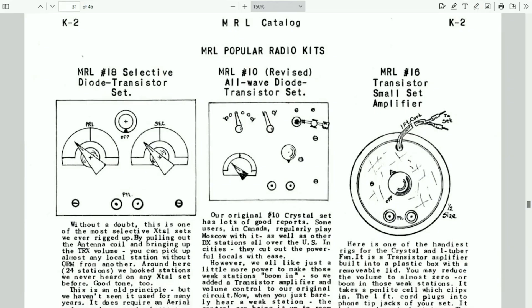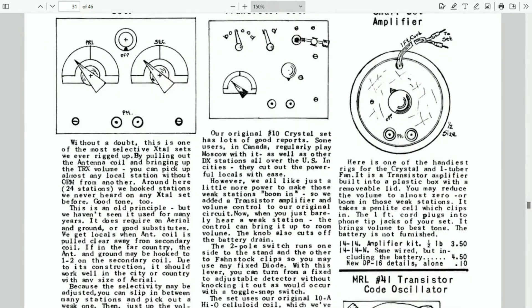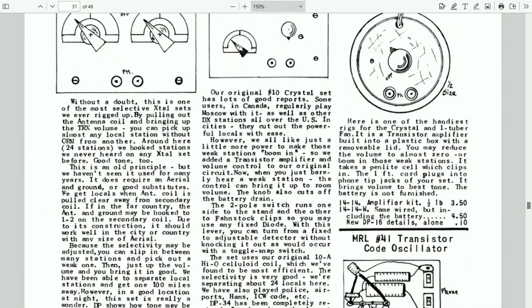Thanks to Jeff Schmidt of Washington, DC, you can now find the 1963 MRL catalog online. This is the entry for the MRL number 18 on the left. If we scroll down a little, you'll see that Elmer wrote, around here we picked up 24 stations.